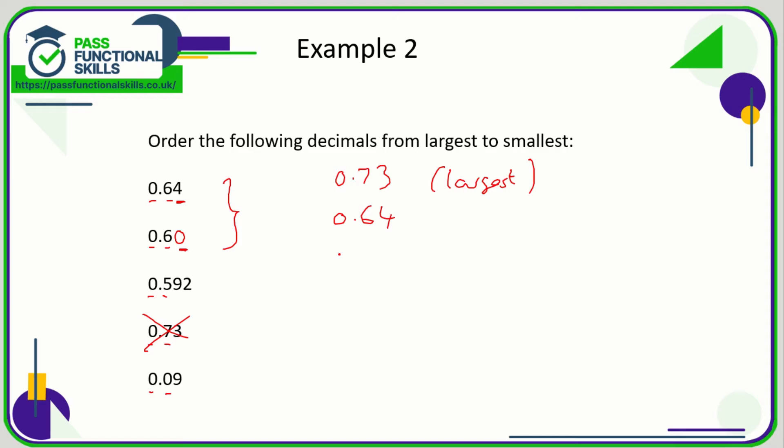Swiftly followed by 0.6. These can be taken out of the equation now. Let's just compare these two numbers here.